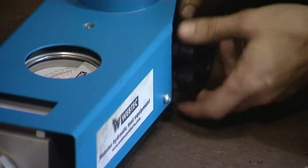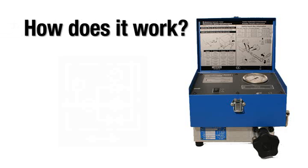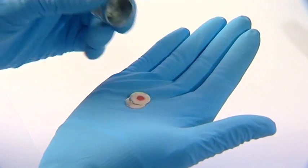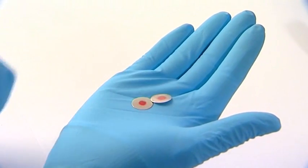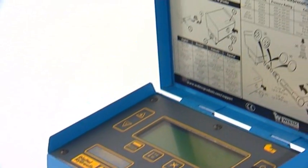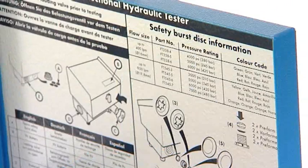The safety disks work in a similar way to a fuse in an electrical circuit. Usually a Webtech load valve is fitted with two burst disks rated to the maximum operating pressure for the tester, typically 420 or 480 bar, although other pressure ratings are available.